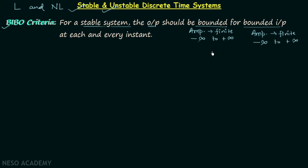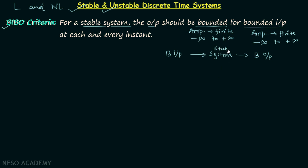According to this statement, if there is a system and you are providing bounded input — meaning the input signal has finite amplitude from minus infinity to plus infinity — and you are getting output with finite amplitude from minus infinity to infinity, then you are getting bounded output. So for bounded input you are getting bounded output, and therefore the system is a stable system. We call this a bounded input bounded output stable system.